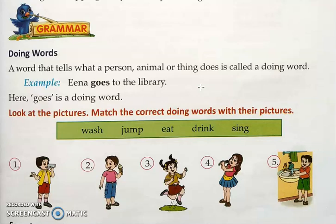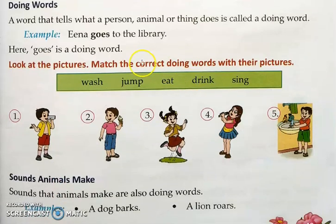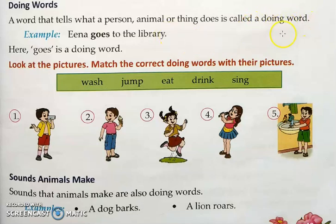The grammar part is a revision of what grammar we are doing in the English 1 grammar textbook. The topic in this chapter is doing words. A word that tells what a person, animal, or thing does is called a doing word — these are action words that show us the action.